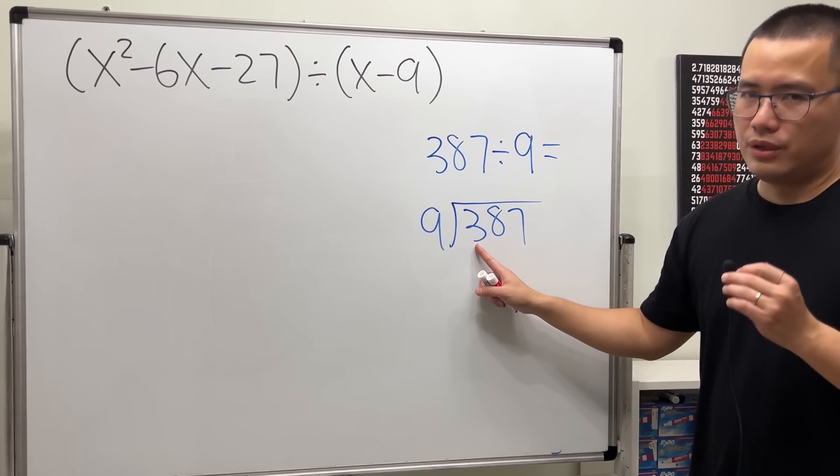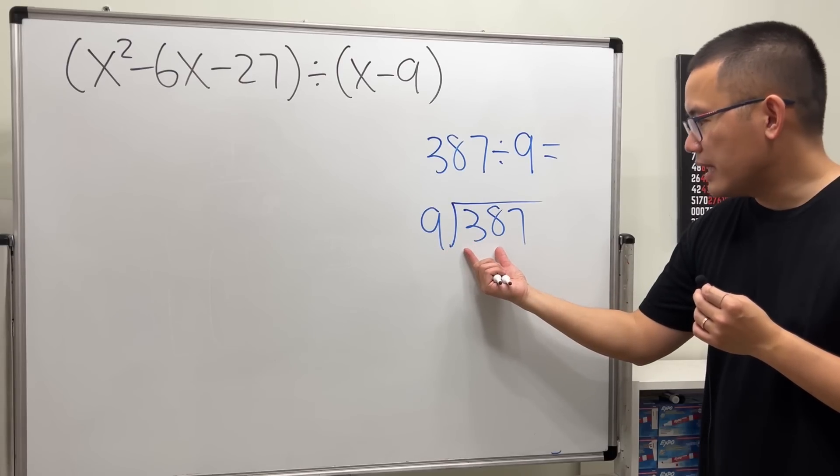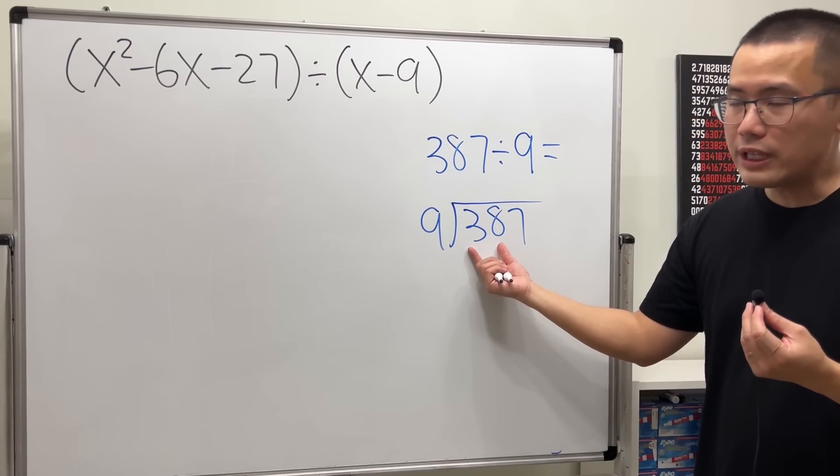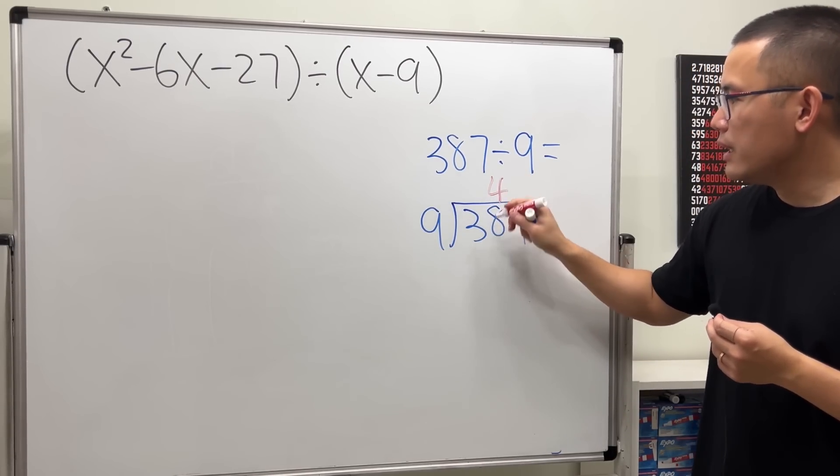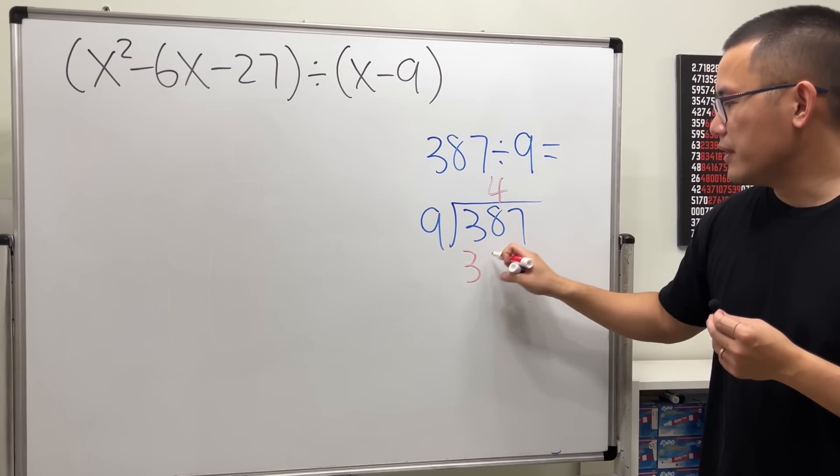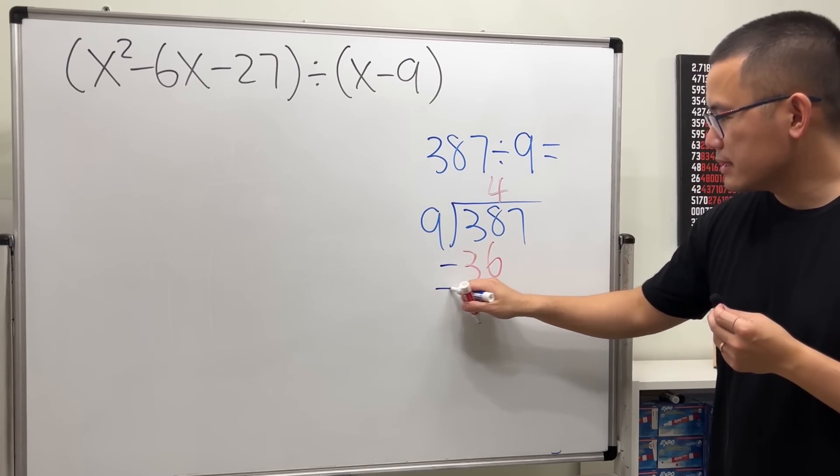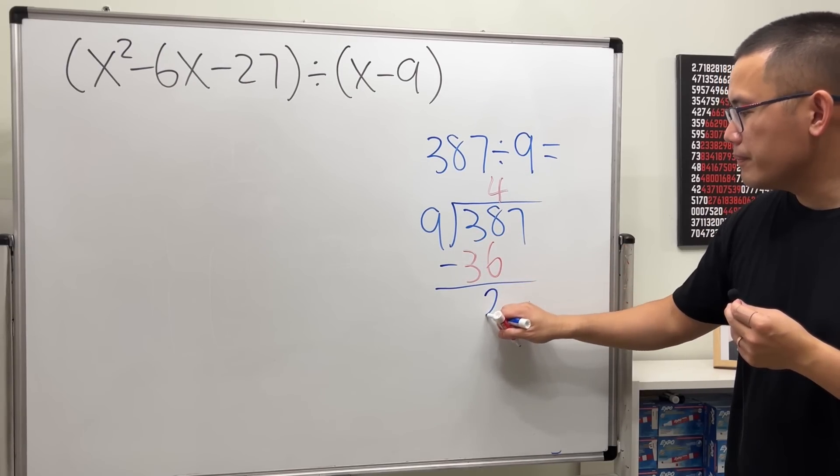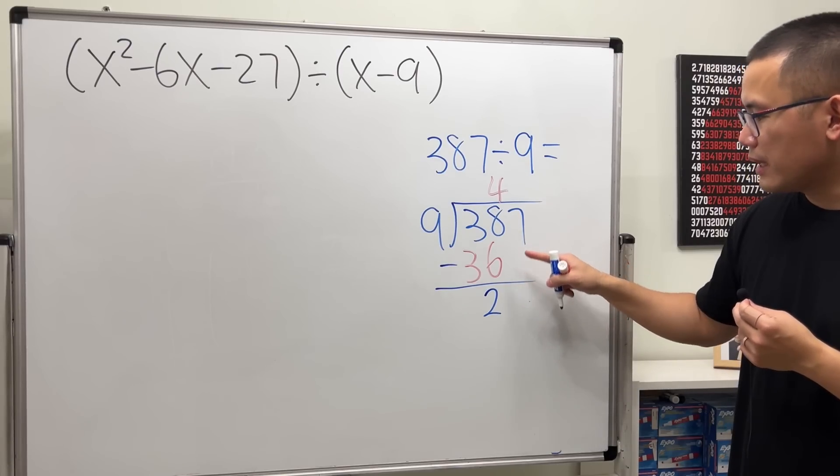Does 9 go into 3? No. So you look at 9 and 38. 9 goes into 38 how many times? Four times, because 4 times 9 can give us 36. And then we subtract. 38 minus 36, we have 2. And then we bring down the 7.